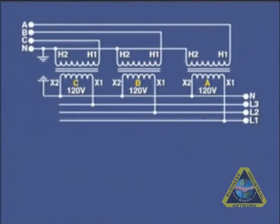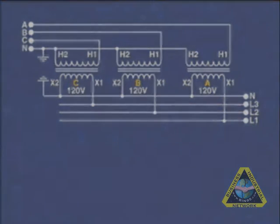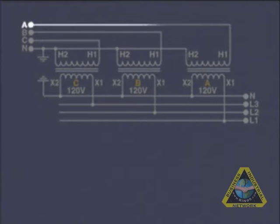Let's go over this transformer wiring to make sure that we have it wired in a Y configuration. Tracing from line A to the first coil's H1 terminal, we go through the coil to H2. This H2 terminal of the first coil goes also to the neutral.